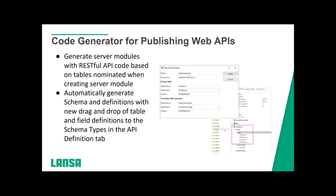Just to touch on this a little bit more when it comes to generating the web APIs — that code is generated for you. It's legitimately a three-step process. You are able to drag and drop a table and field definitions onto the schema type. You're able to quickly put together your security parameters for your API. And you're also able to publish Swagger documentation so that your end users are able to see what fields are available for their consumption. We are really coming into this time of being a part of a vast API economy. Being able to participate in that economy means you're able not only to consume the data that other people have out there, but you're able to provide that data as well.